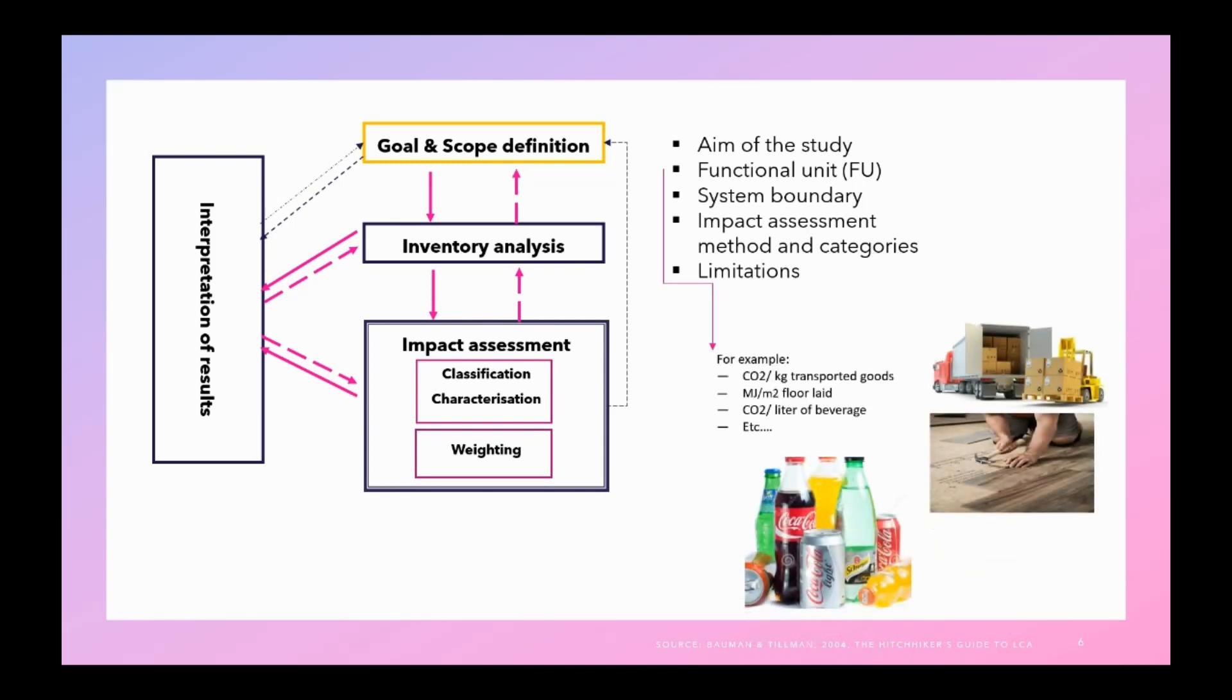For example, in case of goods transport, the functional unit could be carbon dioxide emissions per kilogram of transport goods. Or in case of flooring, it may be megajoules of energy consumption per square meter of floored area. Or in case of beverages, it could be the impacts or carbon dioxide emissions, for example, per liter of beverage.